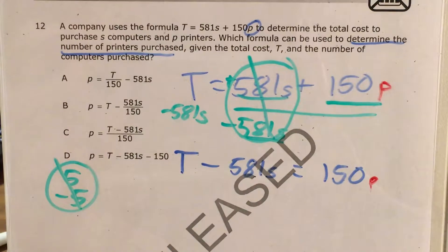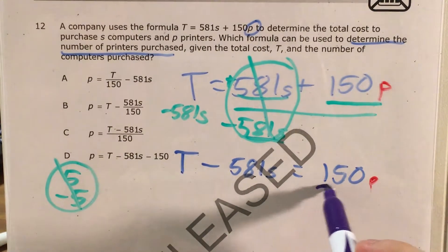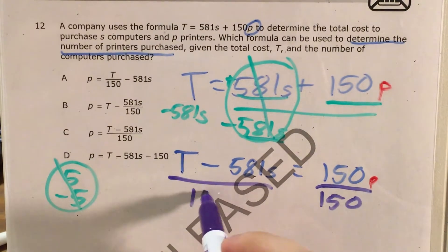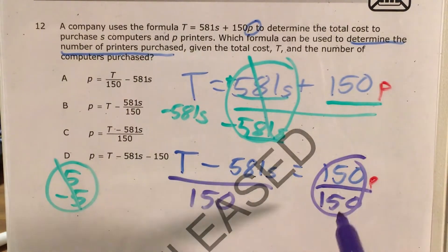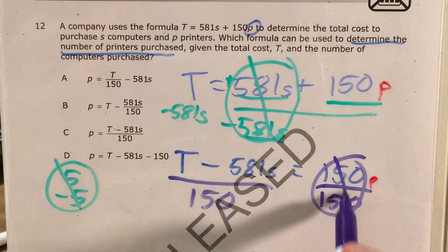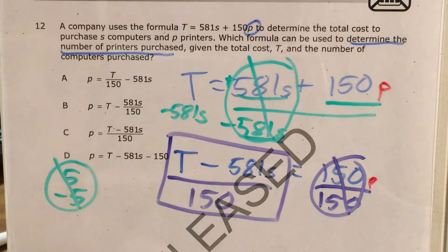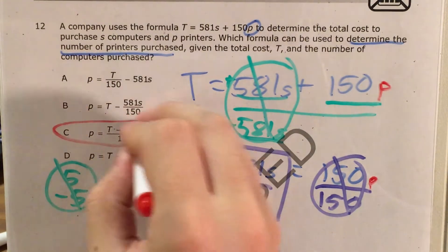So I'm going to ask myself, how do I get rid of that times 150? I'm going to divide. Divide by 150 on the right side. Divide by 150 on the left side. 150 divided by 150 goes away. And this is going to be the junk that I'm left with. And I want to look for an answer choice that matches that. And that is going to be choice C.